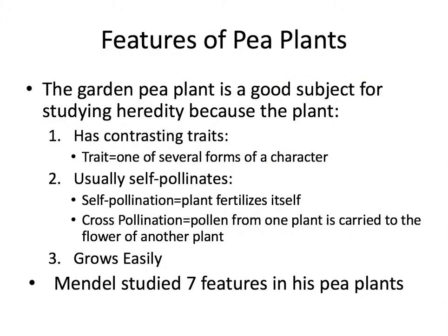So why were pea plants such a good plant to study? There are several reasons. First of all, pea plants have contrasting traits. A trait is one of several forms of a character. For example, Mendel looked at plants that had purple flowers and plants that had white flowers — those are contrasting traits. Or pea plants that were tall and pea plants that were short — those are contrasting traits as well.